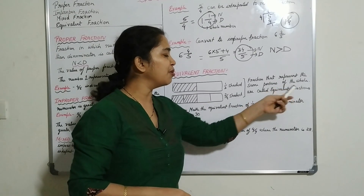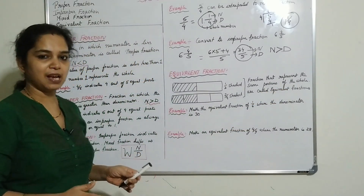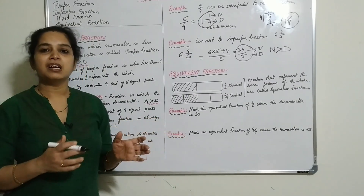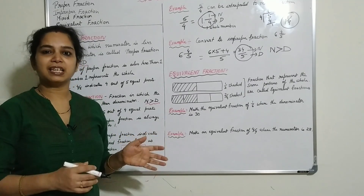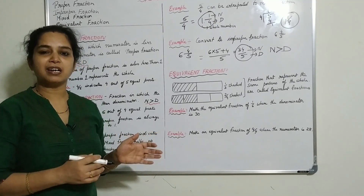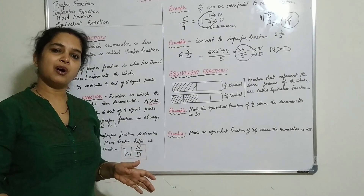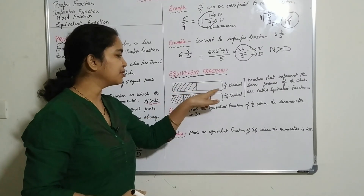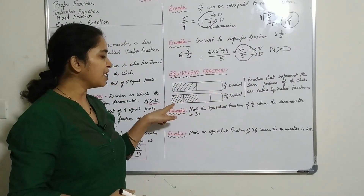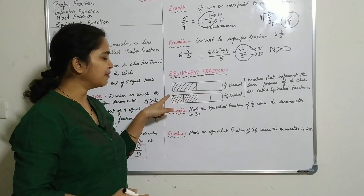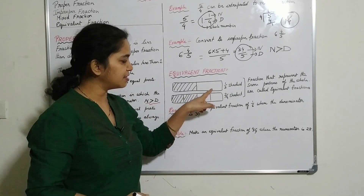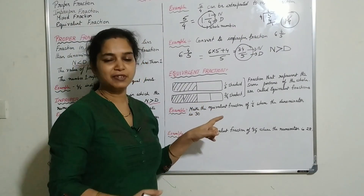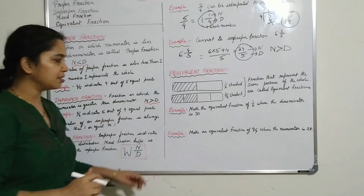Fractions that represent the same proportion of the whole are called equivalent fractions. For example, if you cut a slab into two parts it is 1 by 2. If you cut it into 4 parts and give 2 parts to each person it is 2 by 4, which is the same as 1 by 2 — only half is shaded in both cases.